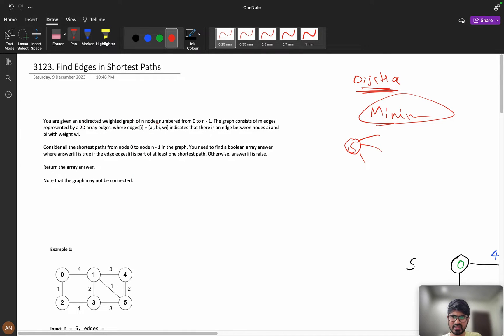Now let us understand the problem. You are given an undirected weighted graph of n nodes numbered from 0 to n minus 1. The graph consists of m edges represented by 2D array edges where edge i is a, b, and weight. So we have a and we have b and it has some weight. This indicates there is an edge between a, b with this weight. Consider all the shortest paths from 0 to n minus 1. Dijkstra's algorithm gives shortest path from 0 to all vertices. From source to destination, it will give shortest path to all the vertices.